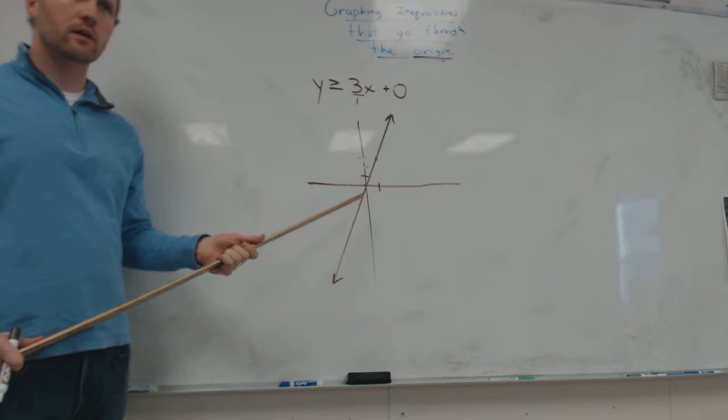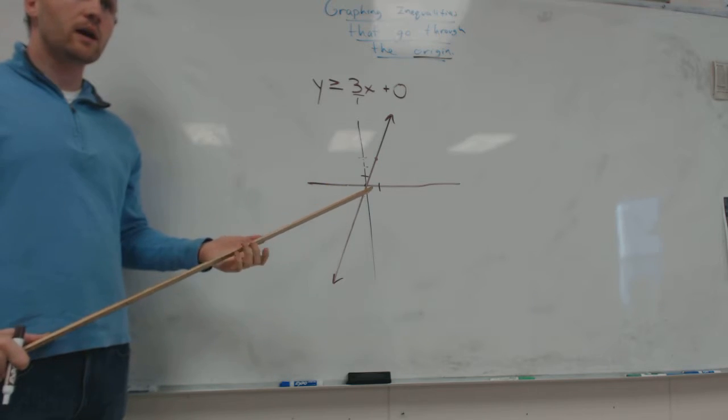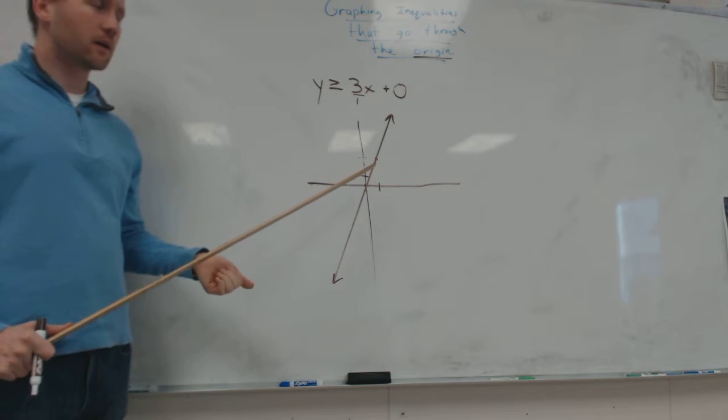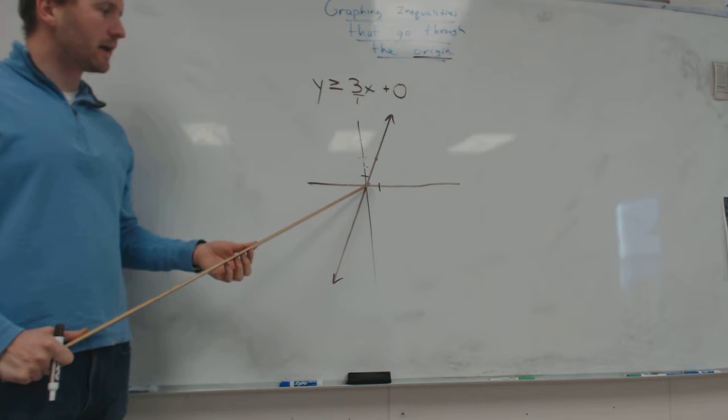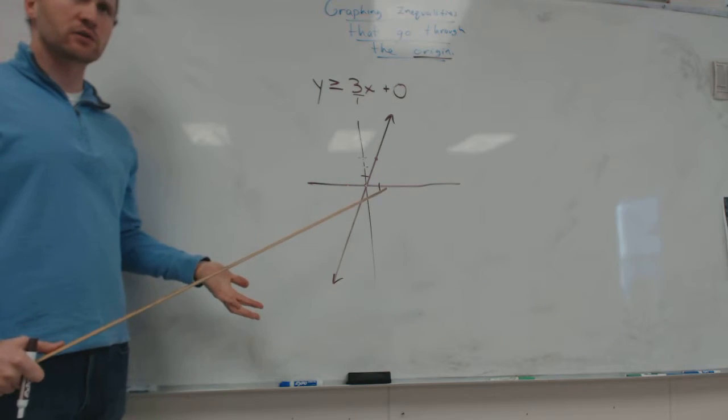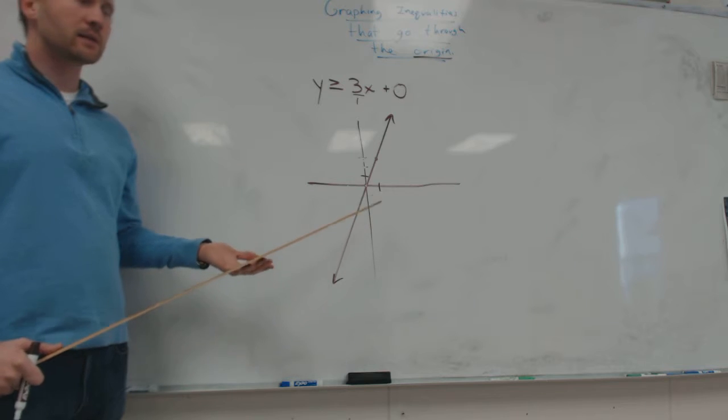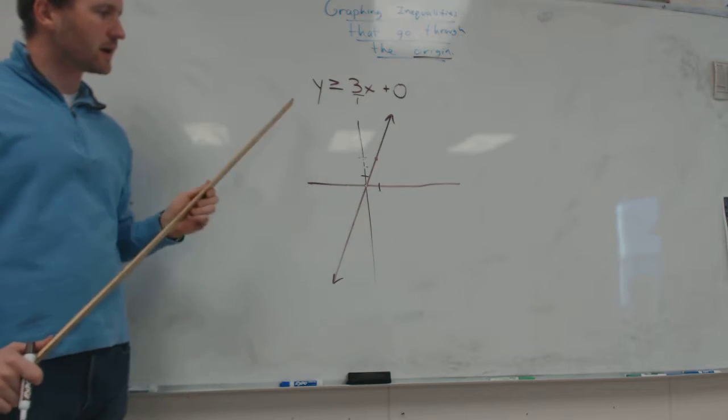How do I figure out which side to shade on? Because you have to plug in a different way. Yeah, why? Because zero is already on the line. Zero is already on the line. So I know that's going to be true. It's not going to tell me which side to shade on.